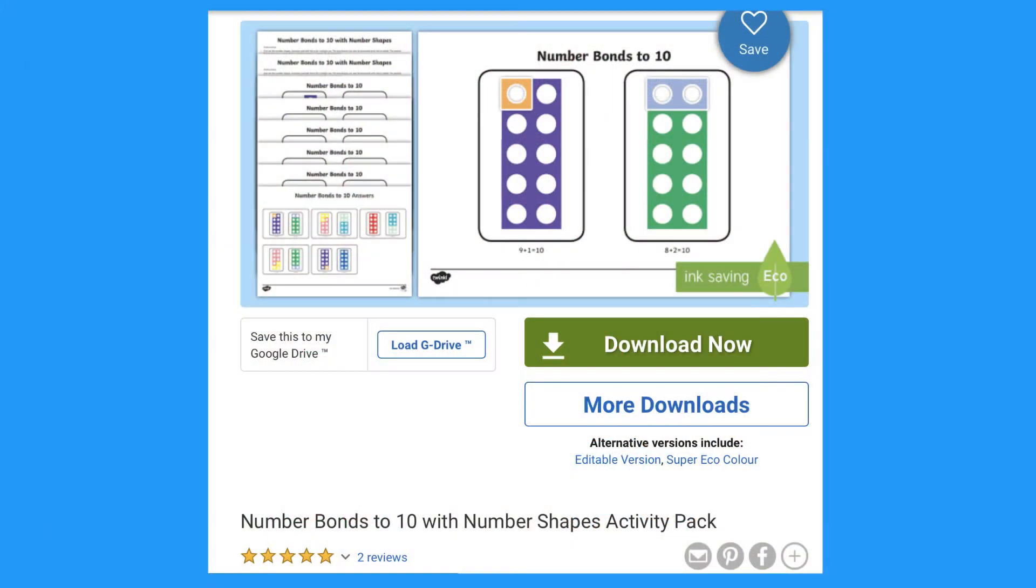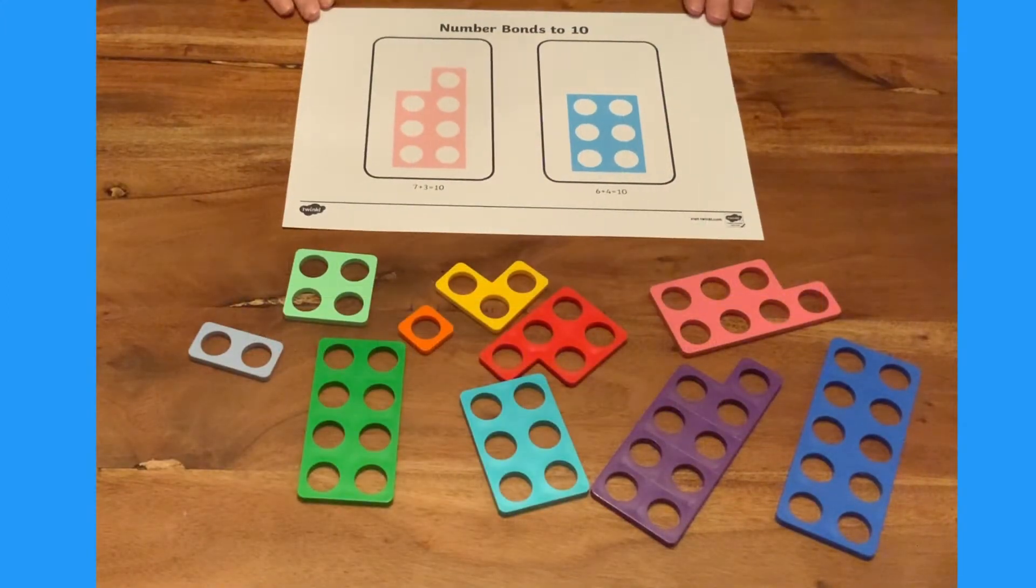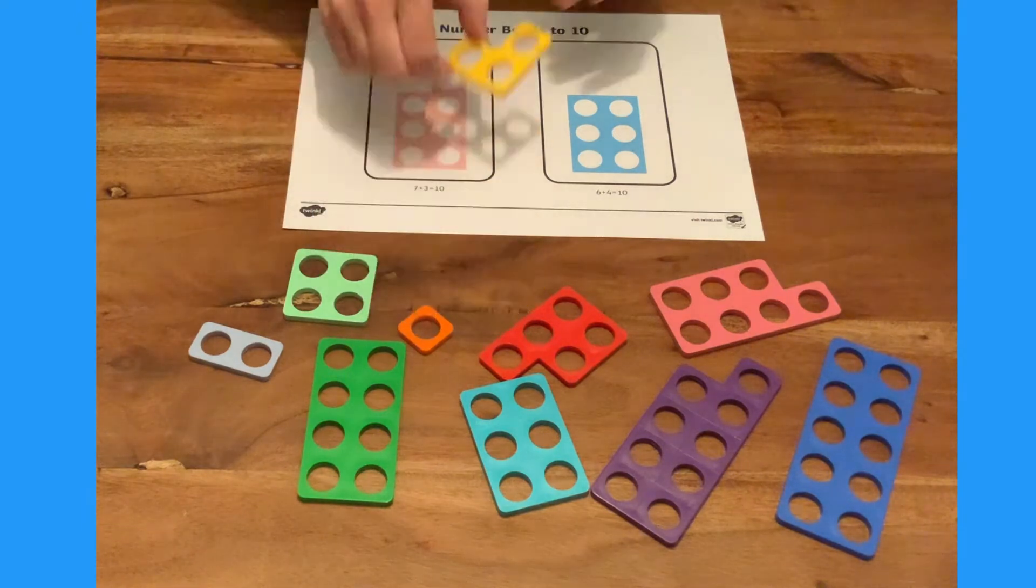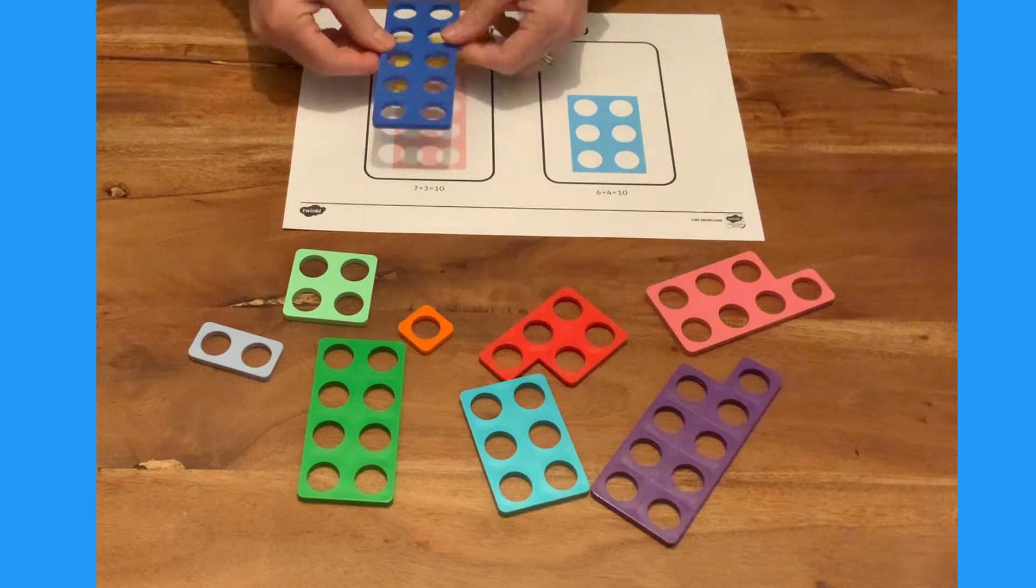Number shapes are brilliant when working with number bonds to ten. Can children find the missing shape to make ten? What goes with seven to make ten? It's three. Children can use the ten piece to see if they've got it right.